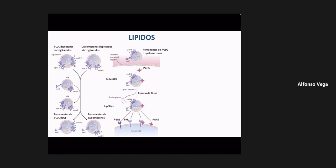Lo que queríamos ejemplificar es que no pueden evaluar la función renal solamente con la creatinina basal. Este paciente tiene 1.3 de creatinina, tiene 60 años, y uno podría decir que está normal, pero al hacer el cálculo de filtración glomerular se evidencia que tiene una filtración glomerular menor que una persona más joven con la misma creatinina sérica. Es indispensable hacer el cálculo para tener una idea mucho más precisa de la filtración glomerular.